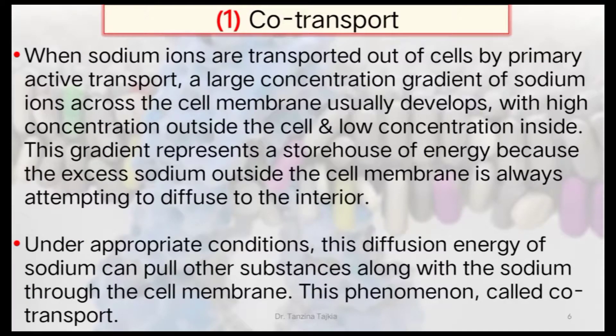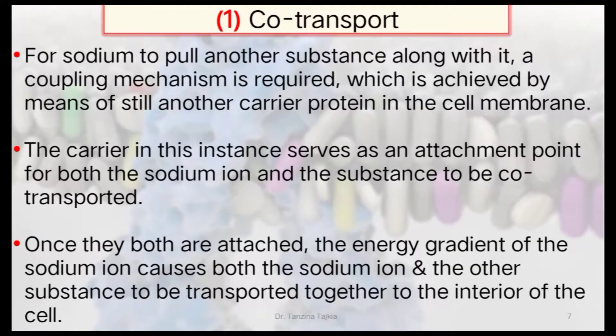When sodium ion is transported out of the cell by primary active transport, a large concentration gradient of sodium ion across the cell membrane develops, with high concentration outside the cell and low concentration inside. This gradient represents a storehouse of energy, because the excess sodium outside the cell membrane is always attempting to diffuse to the interior. Under appropriate conditions, this diffusion energy of sodium can pull other substances along with sodium through the cell membrane — this phenomenon is called co-transport.